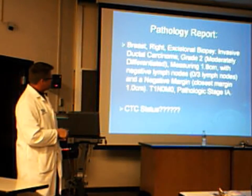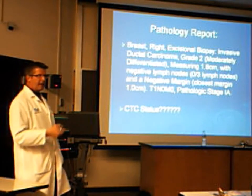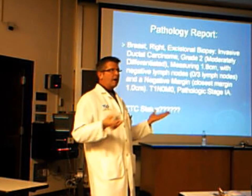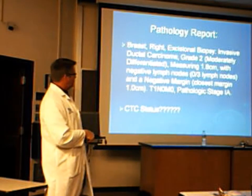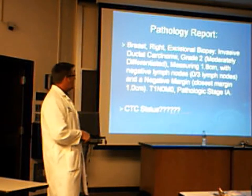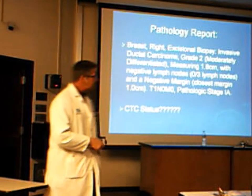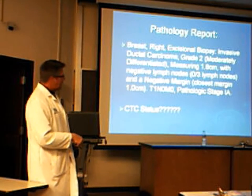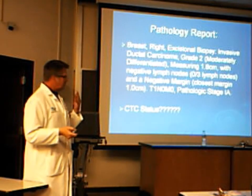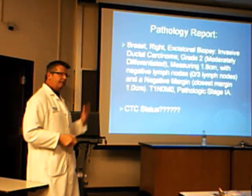Then I give the stage. So this is a T1N0M0, pathologic stage 1A. I say pathologic stage because maybe or maybe not the patient's had a CAT scan, PET scan, or MRI. I'm going to assume it's M0, or sometimes I even say MX — I don't know — unless they've had scans. This is a pathologic stage, and this patient may very well have circulating tumor cells, but we are not currently checking for that actively.